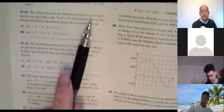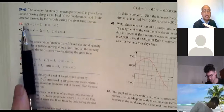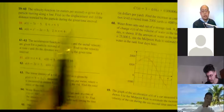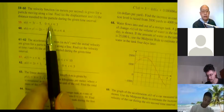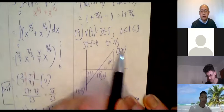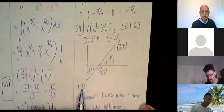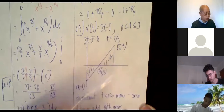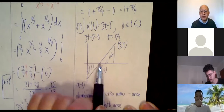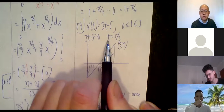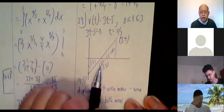Now for the last problem: the velocity function in meters per second is given for a particle moving along a line. Find the displacement and the distance traveled during a given time interval. The function is v(t) = 3t − 5, t going from 0 to 3. At t = 0 you get −5, giving the point (0, −5). At t = 3 you get 4, giving (3, 4). The graph crosses the t-axis when 3t − 5 = 0, so t = 5/3.